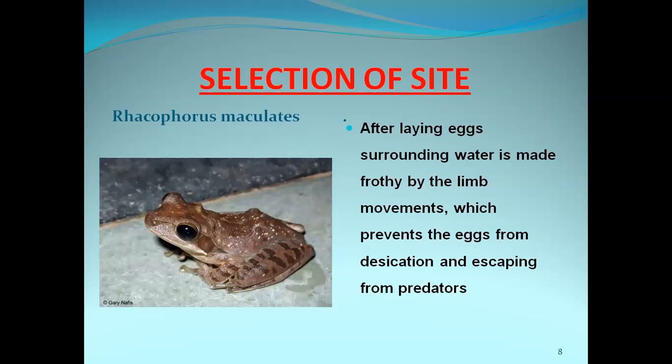The fifth example is Rhacophorus maculatus. After laying the eggs, surrounding water will be made into froth by limb movements — it moves its hind limbs so the water becomes froth. This froth prevents the eggs from desiccation and also conceals the eggs from predators. So two types of protection are provided: protection from predators and protection from desiccation.